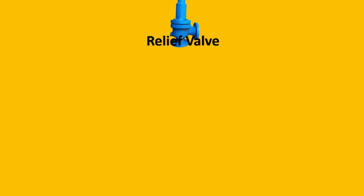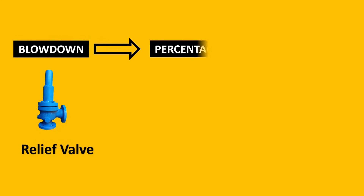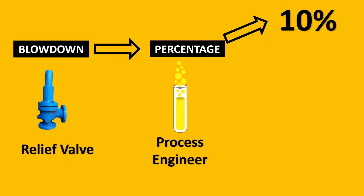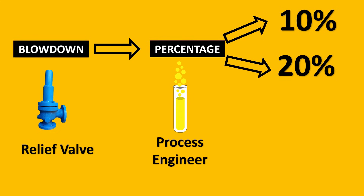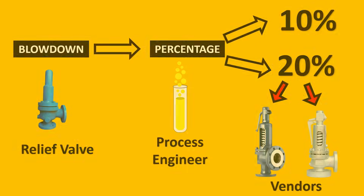So how do you tackle this? Process engineers specify a blowdown value for the relief valve, usually in terms of percentage. You should ask the process engineer what percentage of blowdown is expected — maybe it is 10%, maybe 20%. With this value, you need to evaluate various vendors and ensure their valves meet the blowdown criteria. If they don't meet it, you should not accept that valve technically, because it is going to be very hazardous to your process.